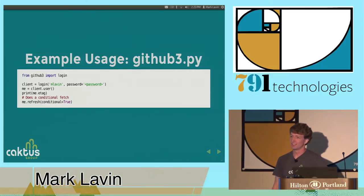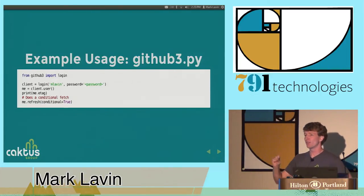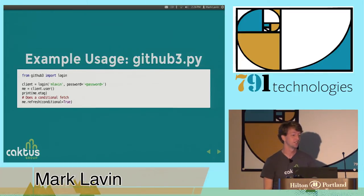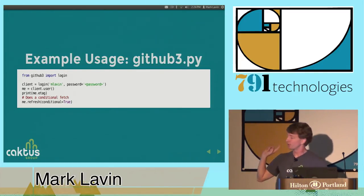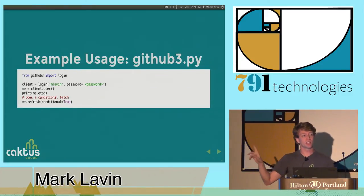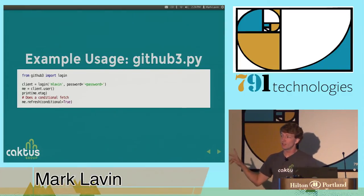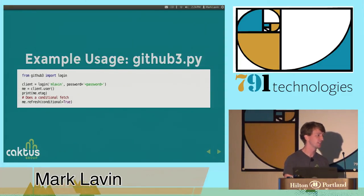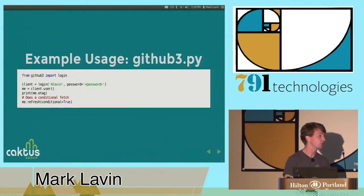You can do a conditional refresh and say: get me my profile if it hasn't changed — this is the version I have, is there a newer version? If you get a 304 Not Modified, it does not count towards your API rate limit. GitHub pays it forward and says this doesn't count towards your API limit because you didn't get a full response — it was not modified.